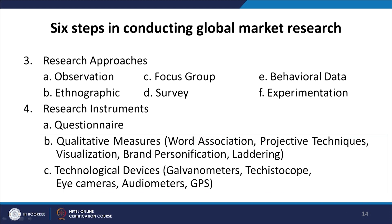The third component of the research plan is research approaches, which are of six different kinds: observation, ethnography, focus group, survey, behavioural data, and experimentation.